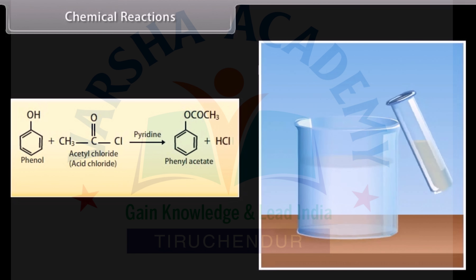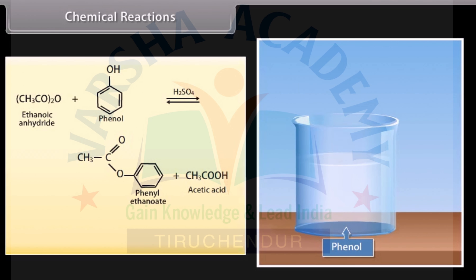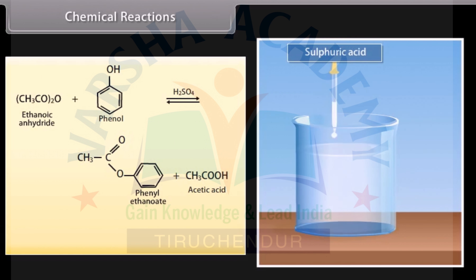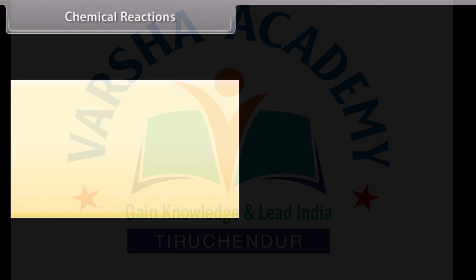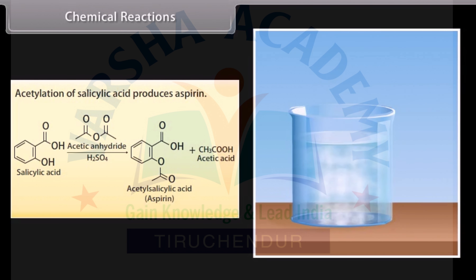Phenol reacts with acetyl chloride in the presence of pyridine to form phenyl acetate and hydrochloric acid. Ethanoic anhydride reacts with phenol in the presence of sulphuric acid to form phenyl ethanoate and acetic acid. The reaction of phenols and alcohols with acetic anhydride in the presence of pyridine is known as acetylation. Acetylation of salicylic acid produces aspirin; acetic anhydride reacts with salicylic acid in the presence of sulphuric acid to form acetylsalicylic acid and acetic acid.